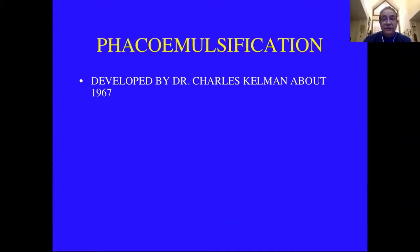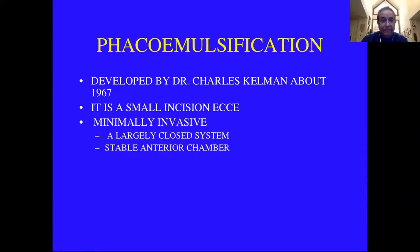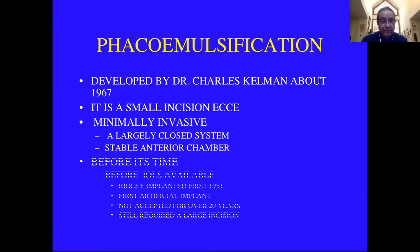FACO was developed by Dr. Charles Kelman around 1967. It's simply a small incision extracap. The cataract surgery we were doing at the time required a 180-degree incision, closing with usually five A.O. silk sutures. They were slow to heal — the healing changed for years, so you had to keep changing their prescriptions. FACO is a minimally invasive closed system where you can get a stable anterior chamber and posterior capsule. But it was developed before its time — we didn't have intraocular lenses.